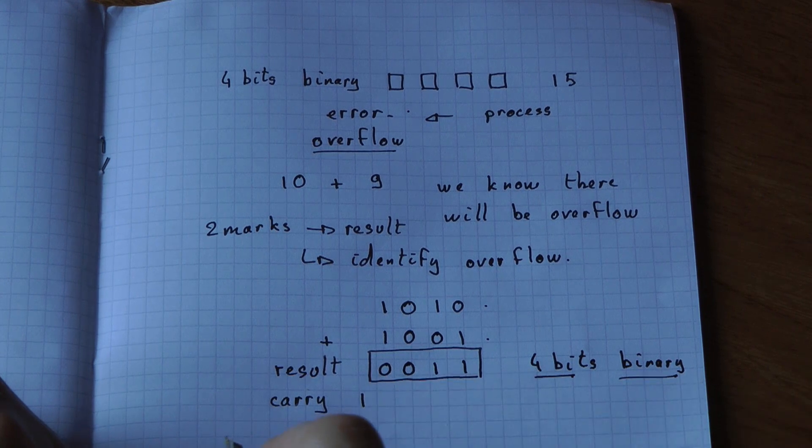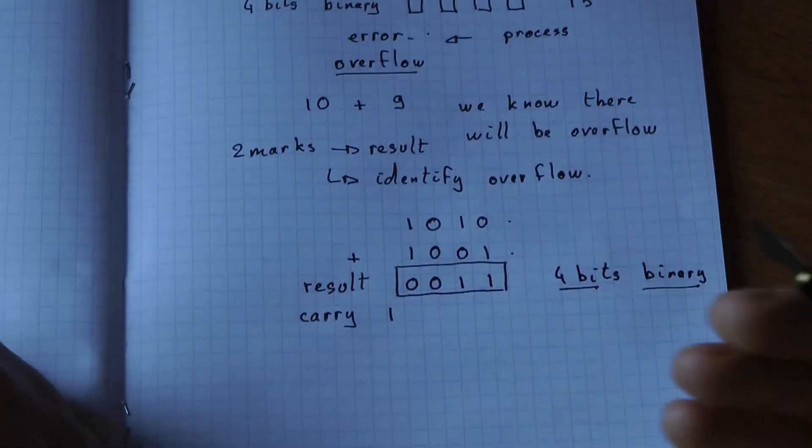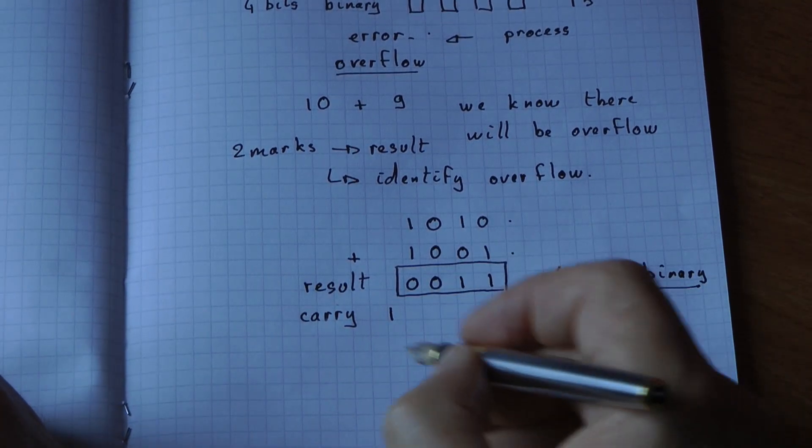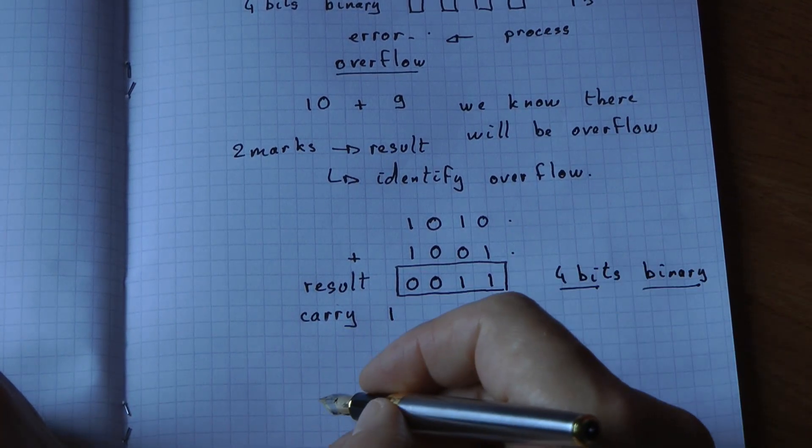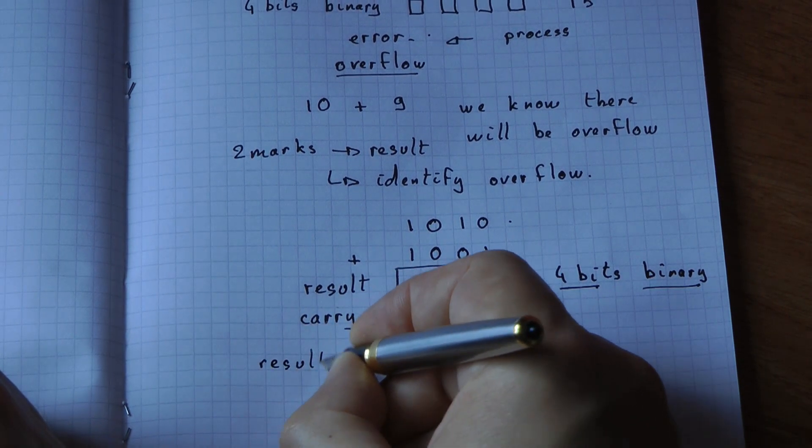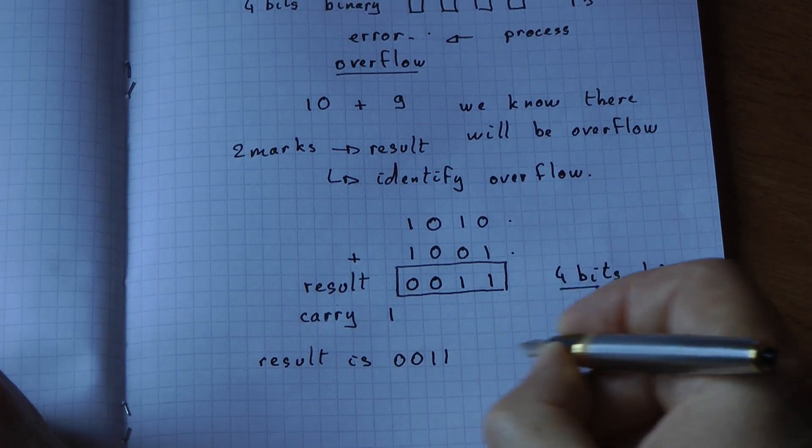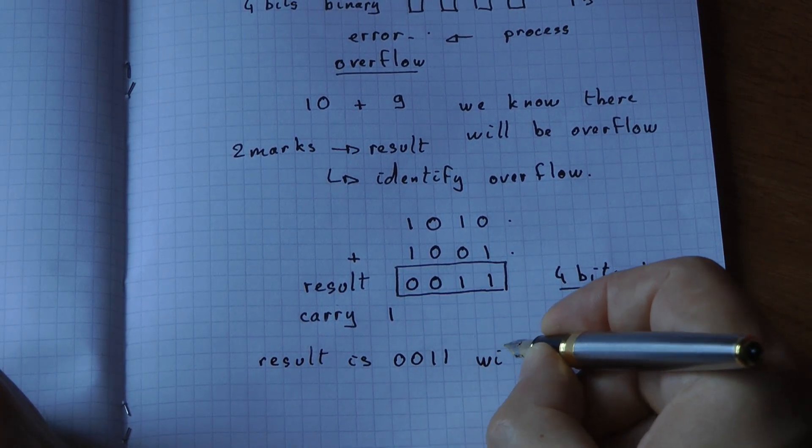So your result is this. And you should be saying, which is exactly what happened inside the CPU, a 4-bit CPU: my result is 0011 with an overflow.